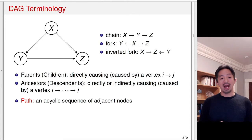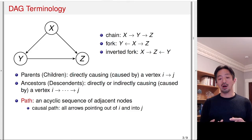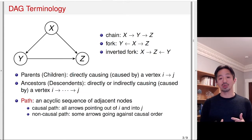Now there's a notion that's called path. Path is an acyclic sequence of adjacent nodes. For example, X, Y, Z is a path. X, Z, Y is also a path. The three chain, fork, and inverted fork that I wrote, each of these represents a path. There is a causal path, which means that all arrows pointing out in one direction. So X, Y, Z, for example, is a causal path from X to Z. There is also a non-causal path where some arrows are going against causal order. If you look at the second one, Y, X, Z, the fork, that is a non-causal path. Similarly, X, Z, Y is also a non-causal path. Here X, Y, Z, the chain, is only the causal path. And then the other two represent a non-causal path, because two arrows are pointing in the opposite direction.